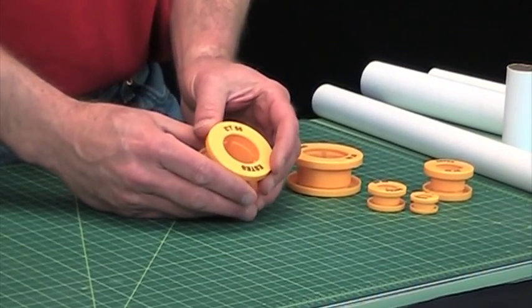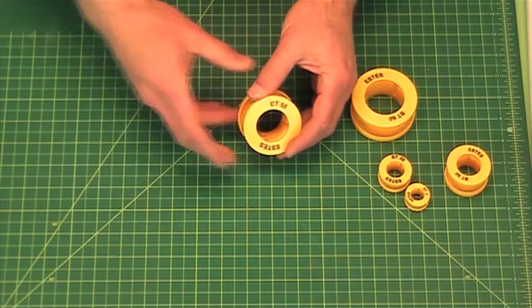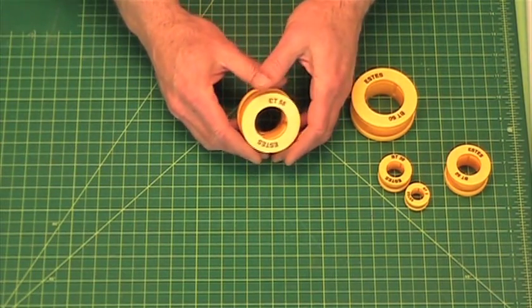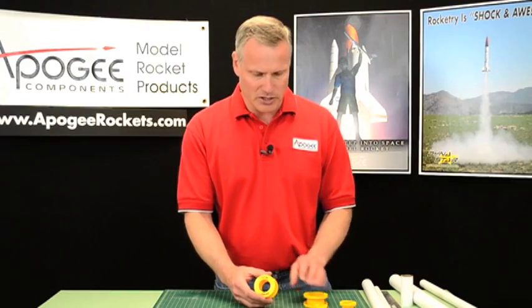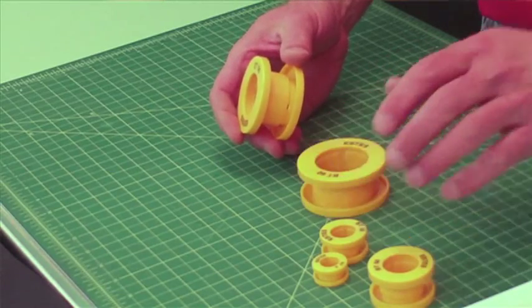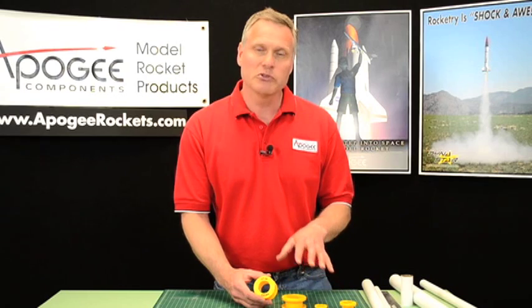These just came out in early 2012 in case you're watching this video in 2015 or later. It's a series of rings that fit on various sized tubes to allow you to cut the tubes easier.